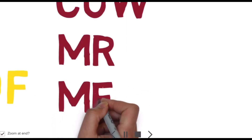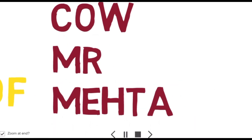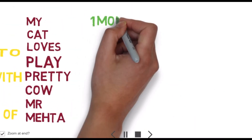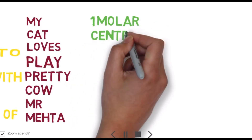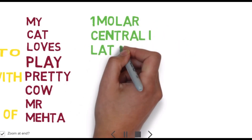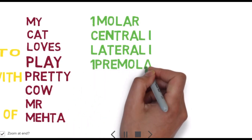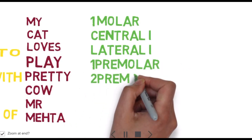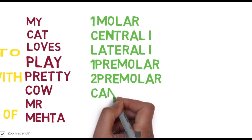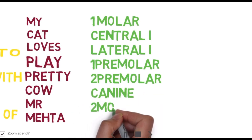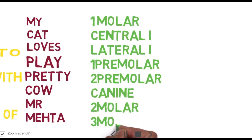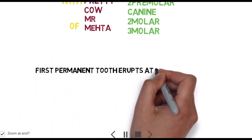'Pretty Cow Of' is written inside, followed by 'Mr. Mehta.' So: M of My is first molar, C of Cat is central incisor, L of Love is lateral incisor, P of Play is first premolar, P of Pretty is second premolar, C of Cow is canine, M of Mister is second molar, and M of Mehta is third molar.